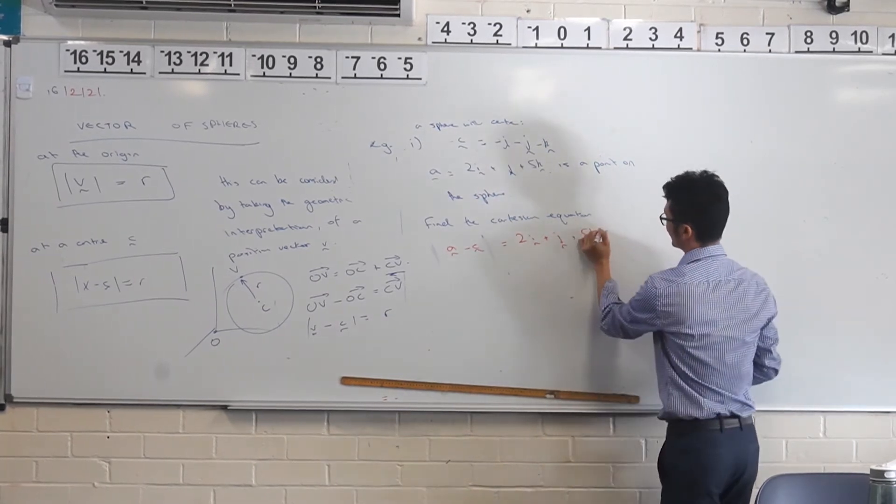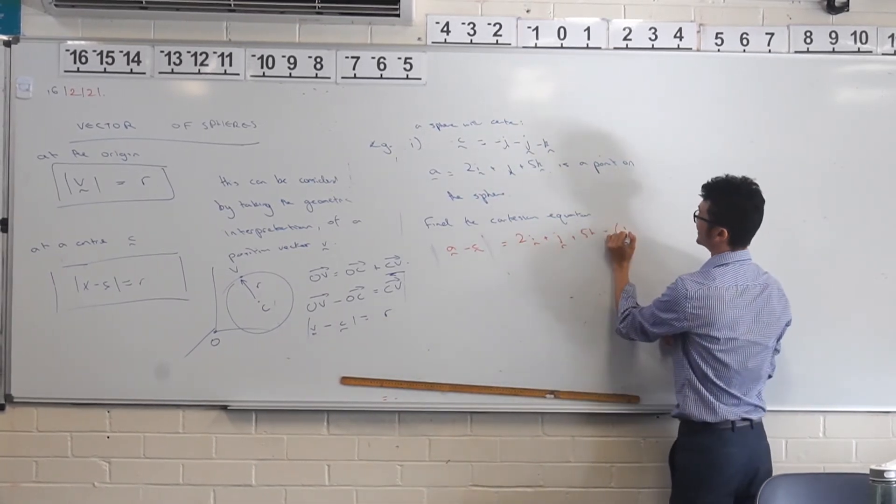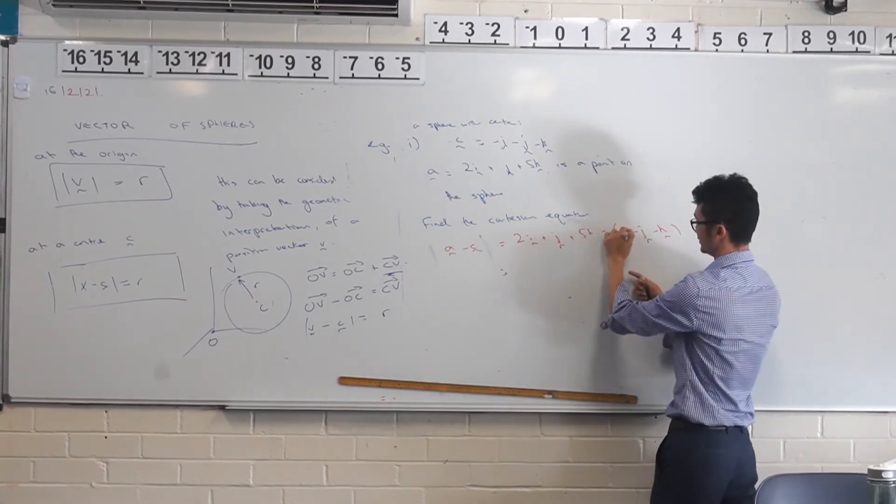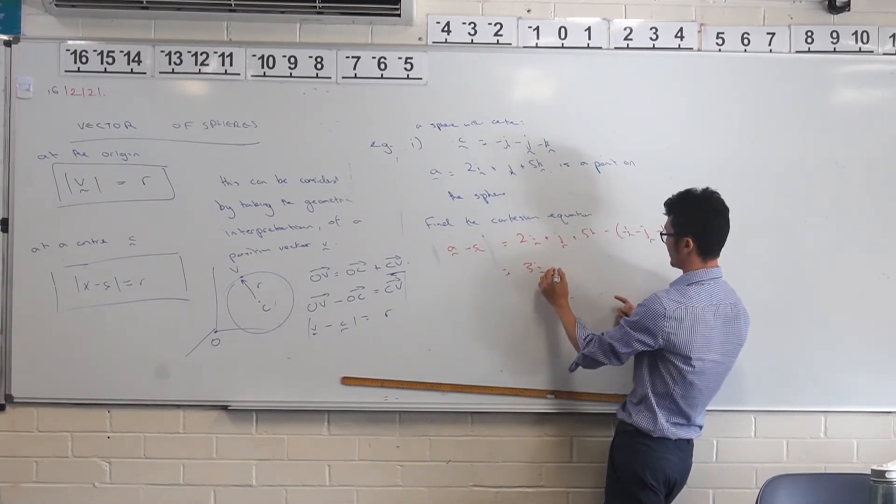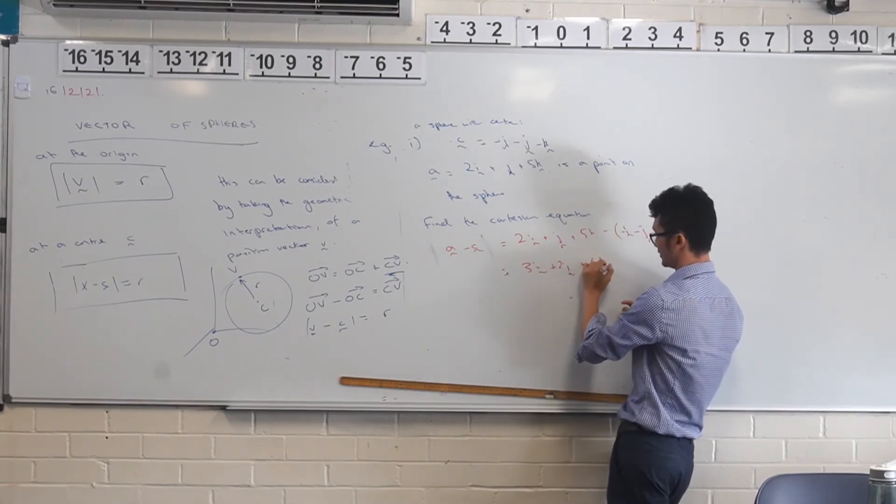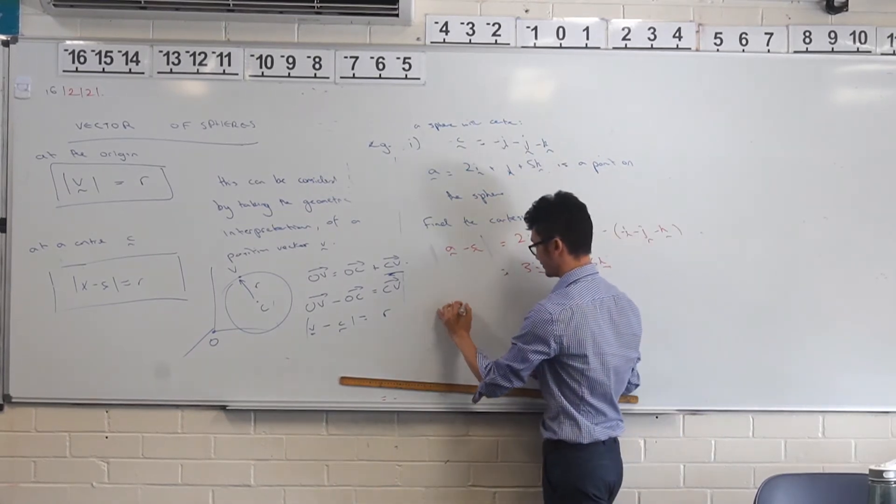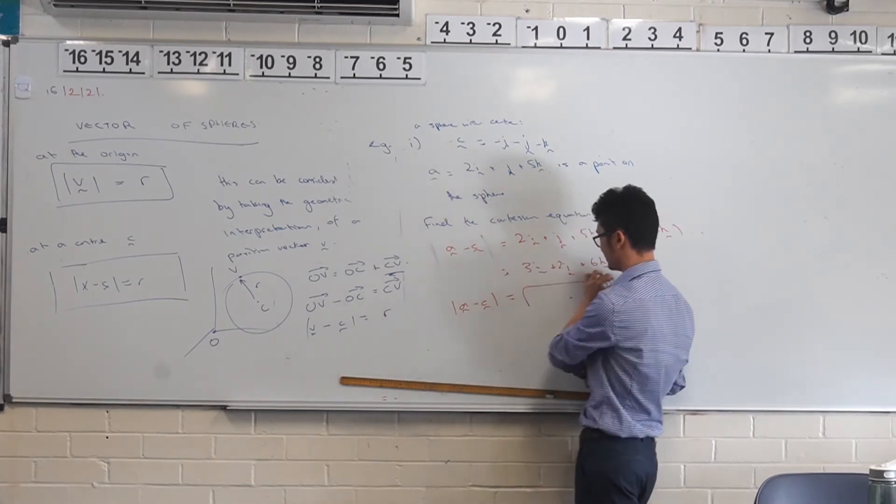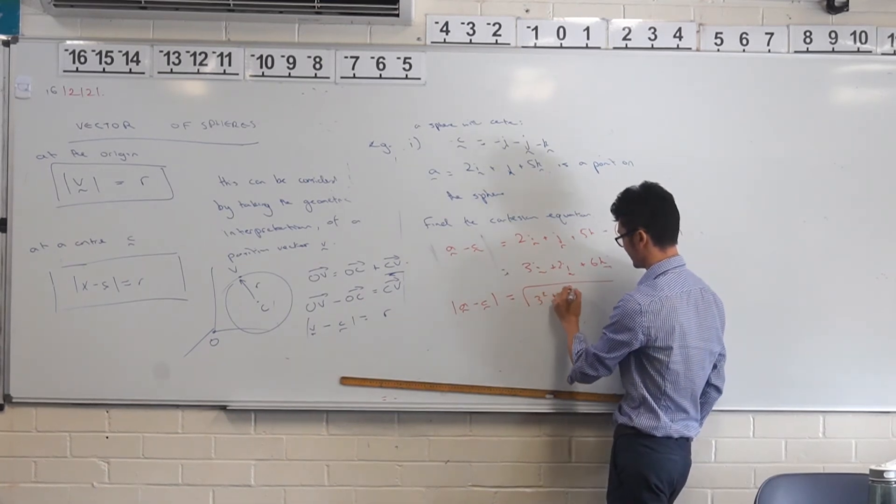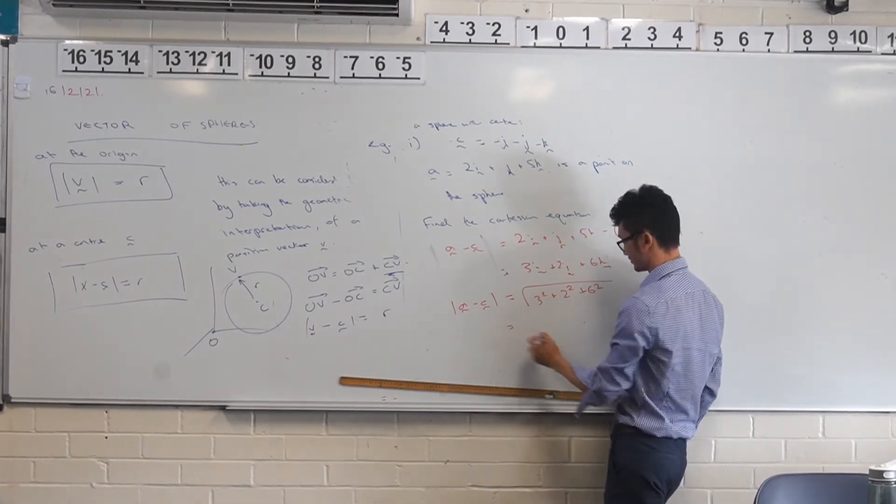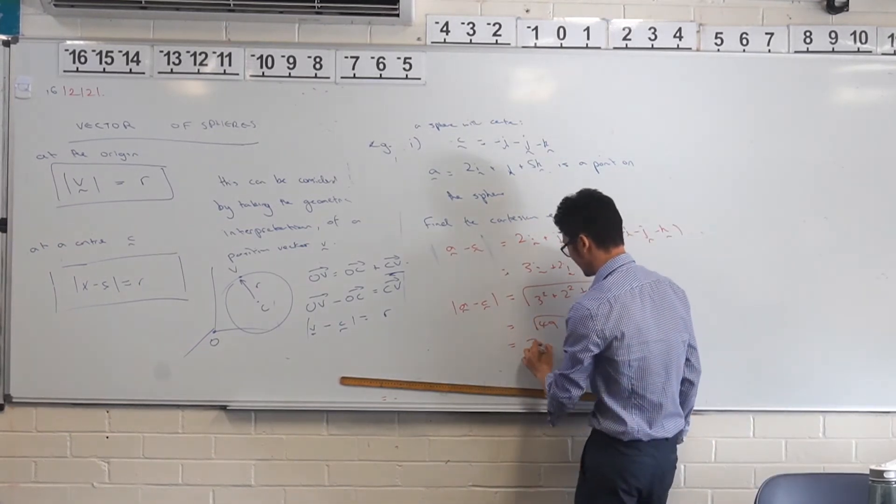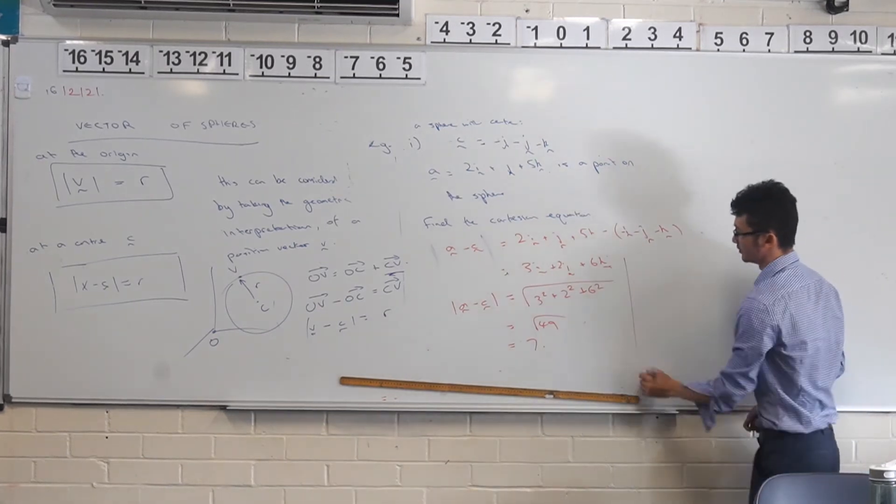I think it's just more writing to do it out like this but that's fine. So that's 3i plus 2j plus 6k. Perfect. And we find the magnitude of that. So 3 squared plus 2 squared plus 6 squared. And that's 9 + 4 + 36, which is 49. And we should get the square root, which is 7. Easy.